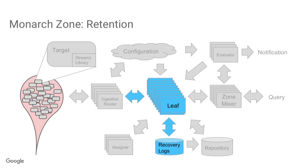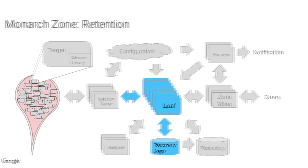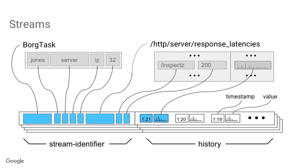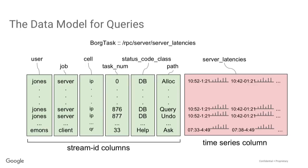Targets send individual metric values, and the leaf retains streams of these metric values. A stream has an identifier — label values from the target, the metric name — and a history of timestamped values sent by the target. This yields a data model for queries that looks like relational tables: the table name is the target schema and the metric name, with columns defining structure for selection and joins, and a column that has the actual time series. This is physically distributed across zones and leaves, but from the point of view of queries it's queried as a table.